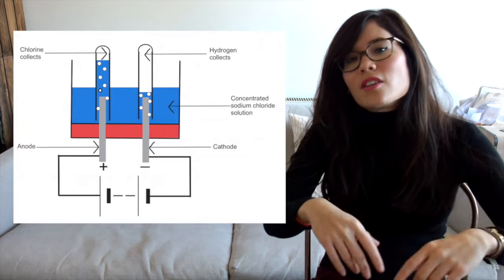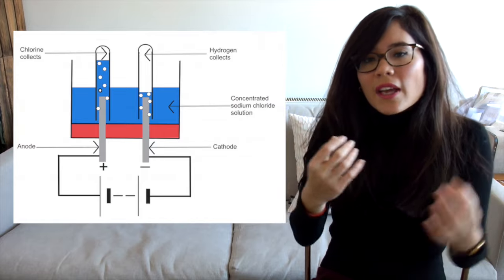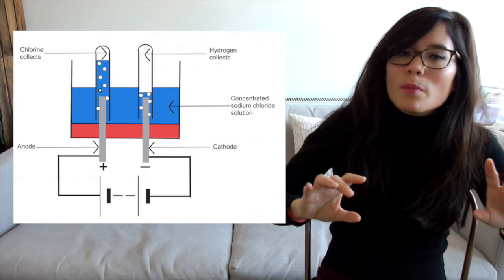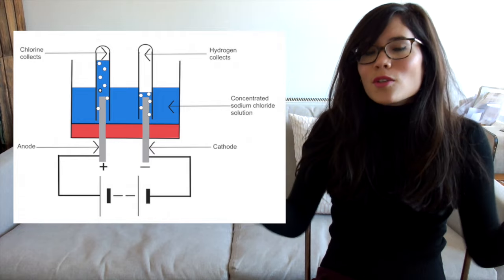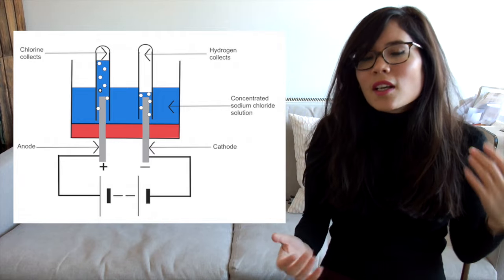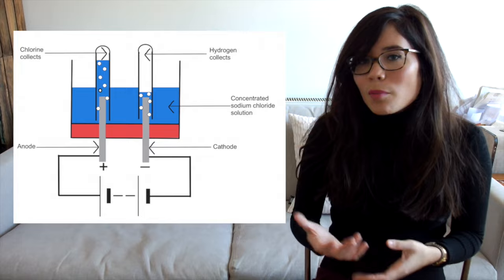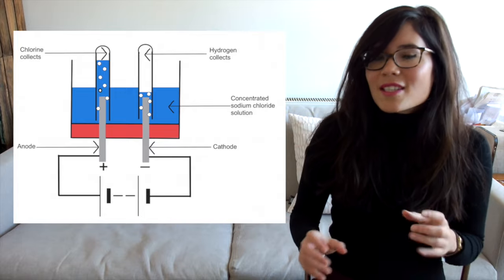Next up you introduce electricity to the circuit. In a simple school experiment we could just have a power pack and we're going to have a couple of electrodes — all they are are the places where our two elements are going to form — and we dip those electrodes into the solution. The electrodes are usually made out of either carbon or something like platinum because these things are very unreactive, because we don't want them getting involved in the reaction.